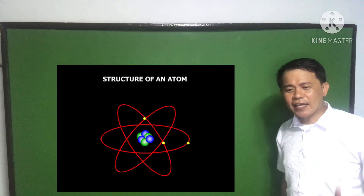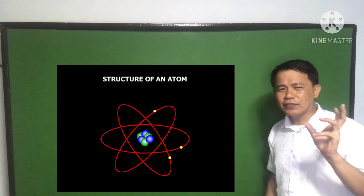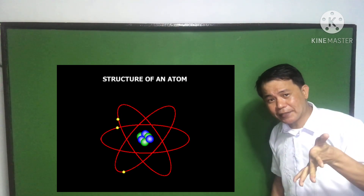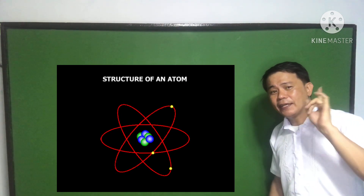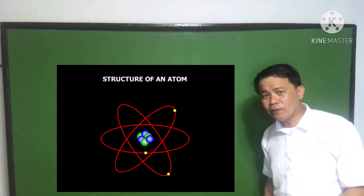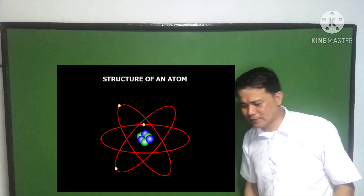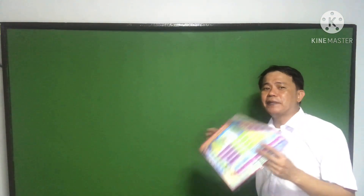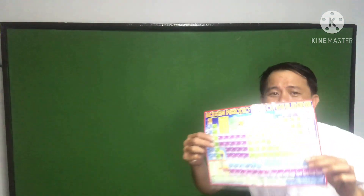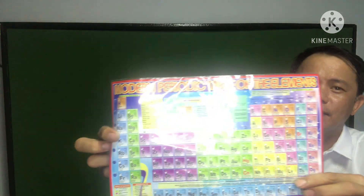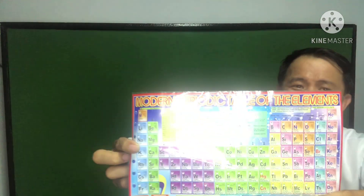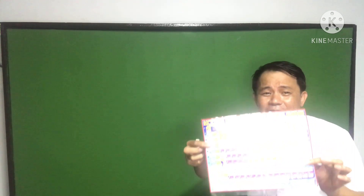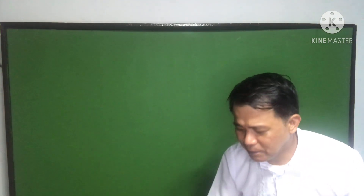The electrons are the negatively charged particles. As I have said, everything in the universe is made up of matter, and everything in this universe is made up of atoms. And everything in this periodic table of elements that we're going to discuss is made up of different kinds of atoms.